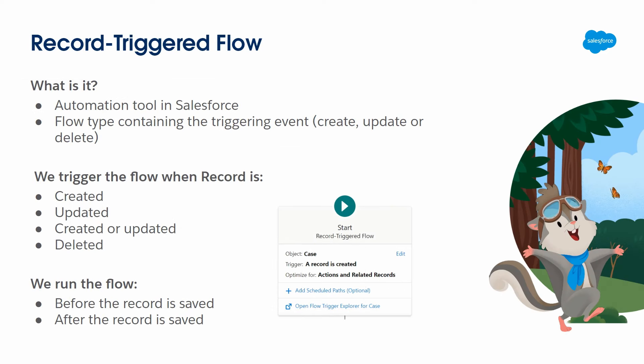Record Triggered Flows is the only flow type containing a triggering event, which means it can run automatically when a record is created, updated, created or updated, or deleted. That's why it's the best option to replace existing workflow rules and process builders when they are finally deprecated. We also have two options for when to run it: before or after saving the record in the database.